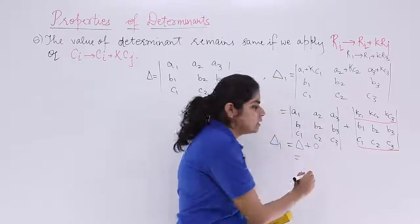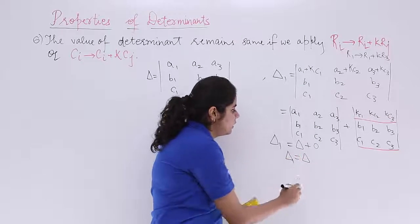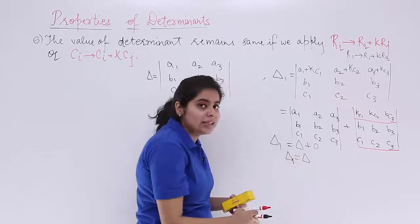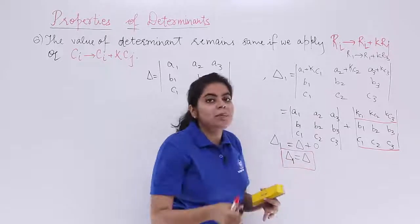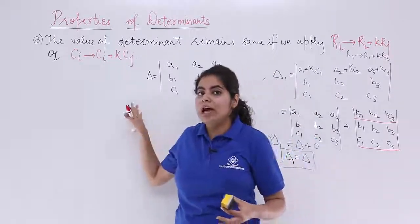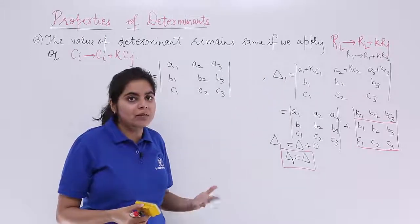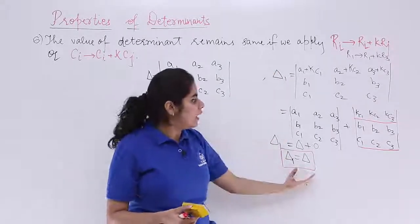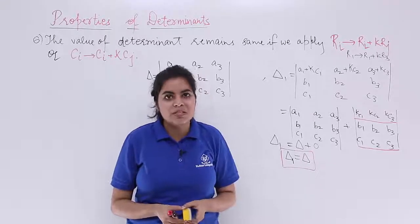Now, what is anything plus 0? It is the same thing. So it is del only. Here it is del 1 only. So you follow that del 1 equal to del in this case. That means any determinant is given and you apply any operation such as the ones described above in the case of rows and columns. The value doesn't change. The value remains the same. That is what is the motto of this property.